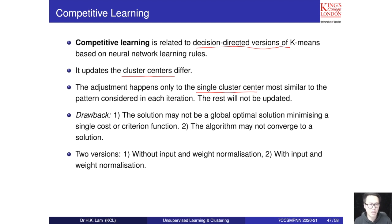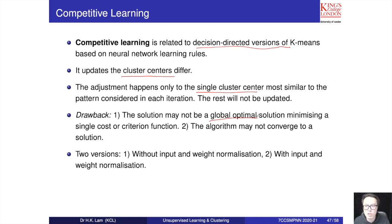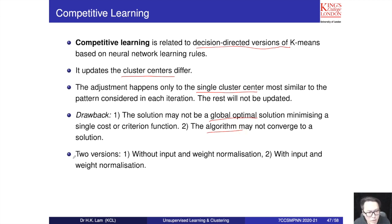The drawbacks are: first, like gradient descent, it does not guarantee a global optimal solution — sometimes it will get stuck in a local minimum. Second, if you do not choose the right parameters, the algorithm may not converge. We have two versions of this algorithm.